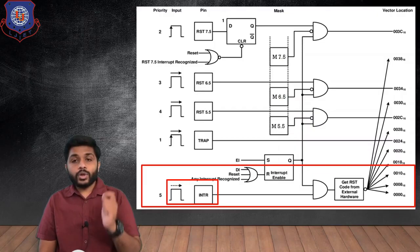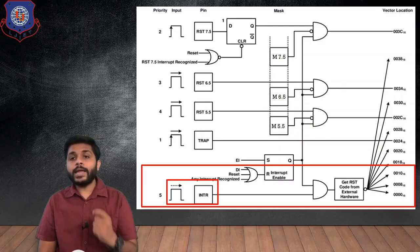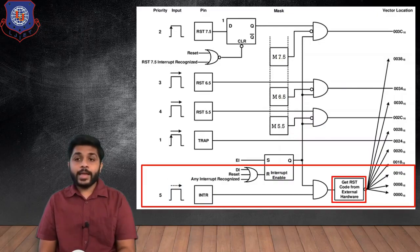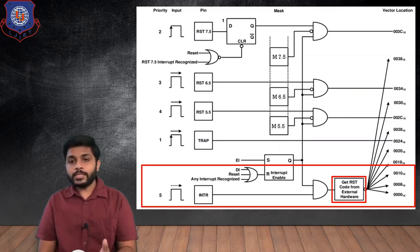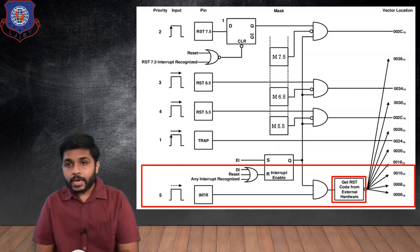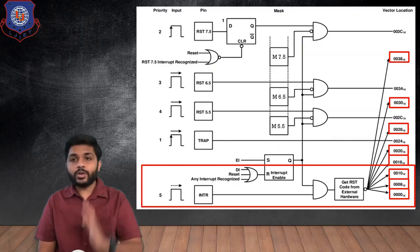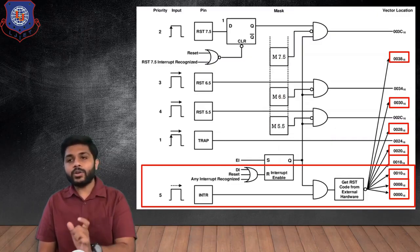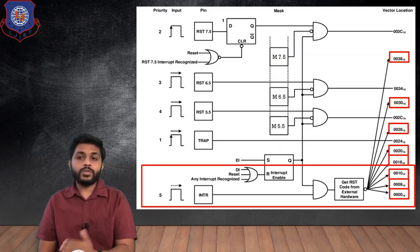The last interrupt is INTR. INTR is level triggered and is a non-vector interrupt, meaning the vector location for INTR is not fixed — the user can provide any vector location they want. That vector location can be provided using the RST instruction. There are different vector locations available for INTR, and the user can set any one of them. When an interrupt is received at the INTR pin, the processor stops its current execution and jumps to the vector location set by the user.